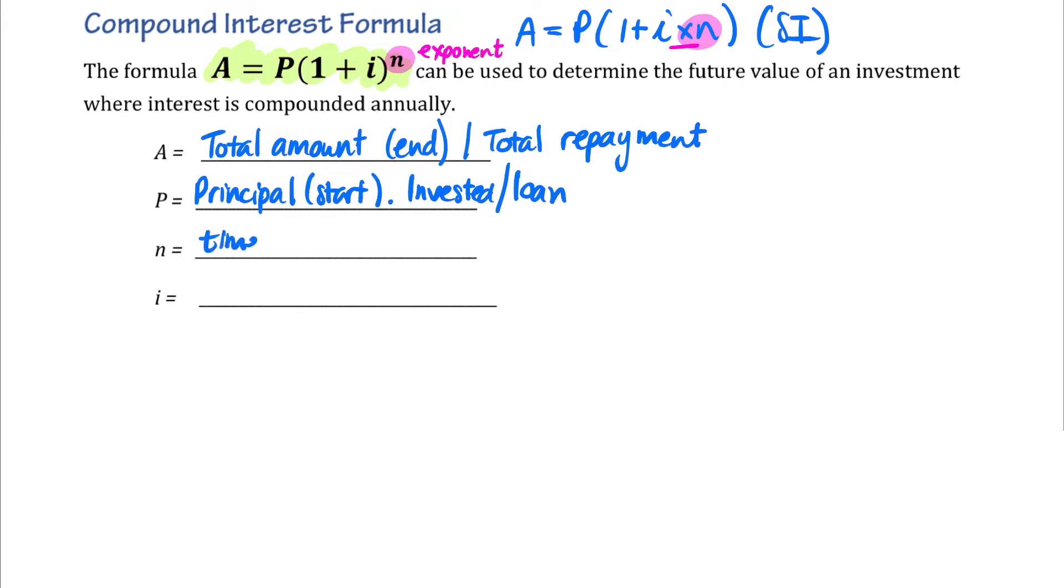N is the time period. And remember, we said in grade nine, we compound things annually. So N represents how many years my money is sitting in that account for, or how long my loan is. And I is my interest rate.